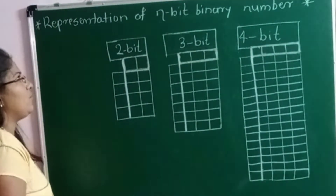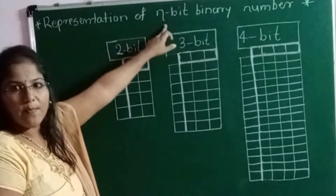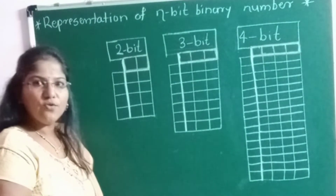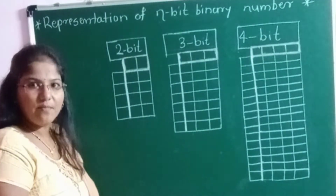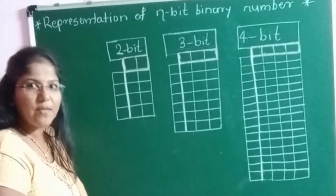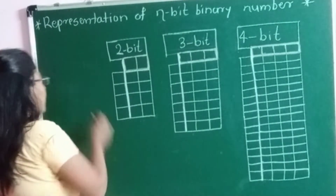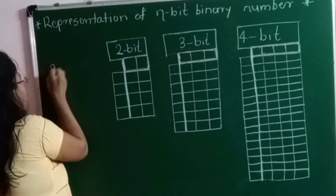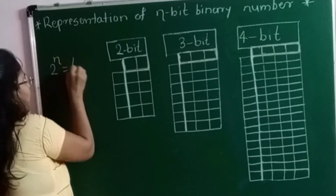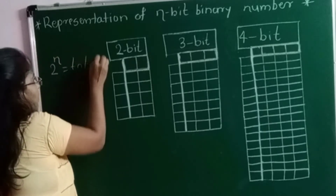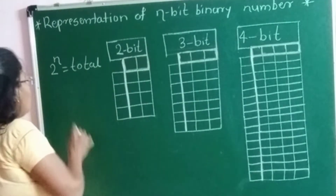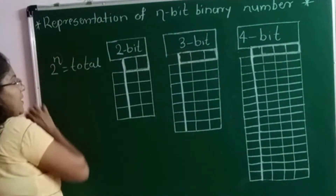Suppose I am going to use n-bits to represent any binary number. First I should know how many total binary numbers I can represent using n-bits. The formula is: 2 raised to n equals total, where total is the total number of binary numbers we can represent using n-bits.